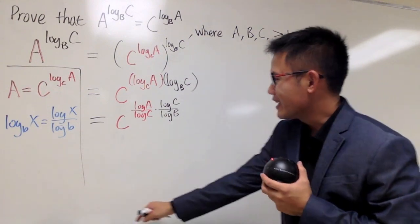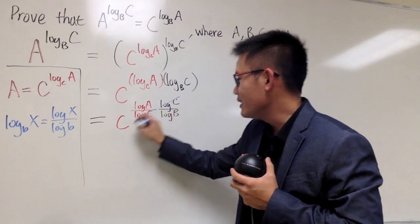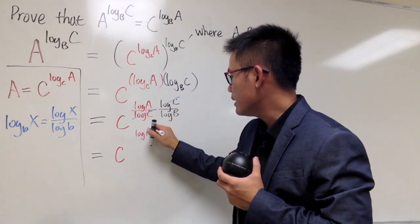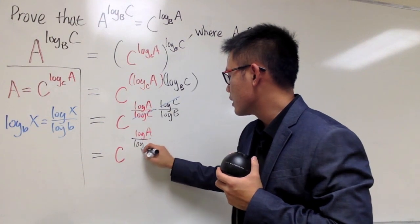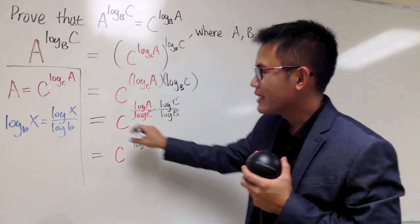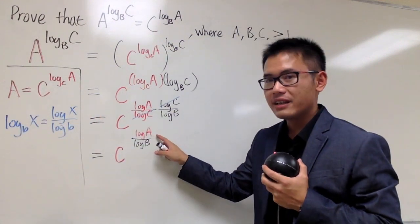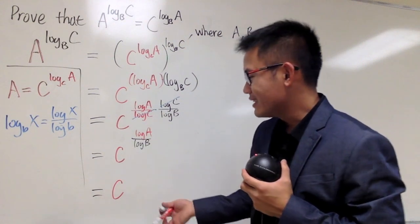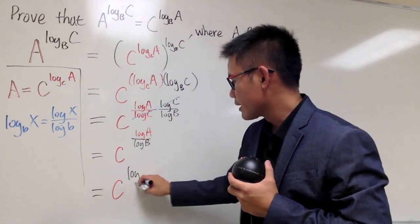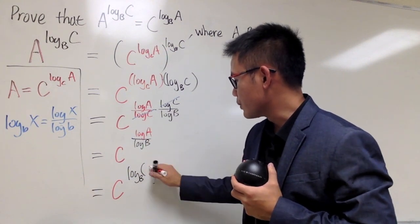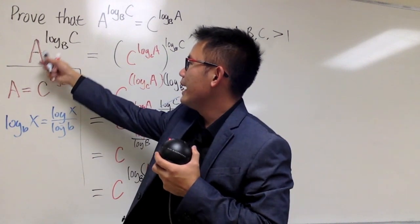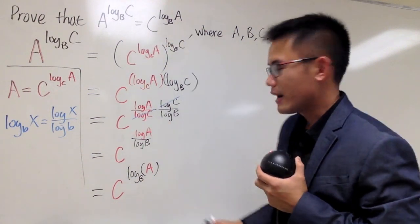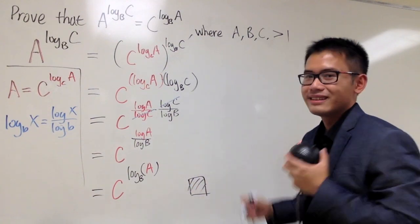As we can see, log C and log C cancel each other out — that's super nice! We're left with C raised to log A over log B. Looking at the change of base formula backwards, log A over log B is just log base B of A. So at the end we have C to the log base B of A. The left-hand side, A to the log base B of C, is indeed the same as C to the log base B of A — we are done! We draw the box and share the proof. Everybody happy.